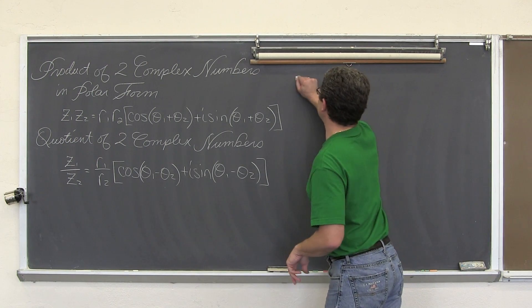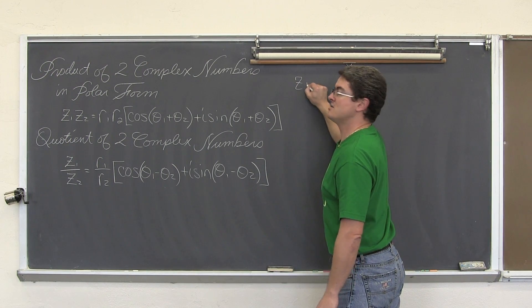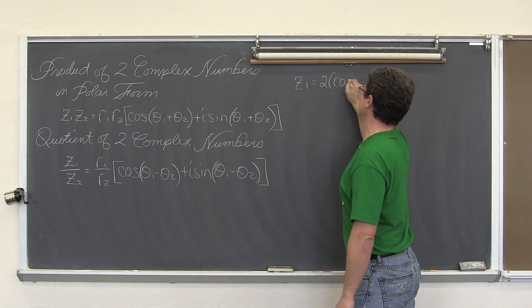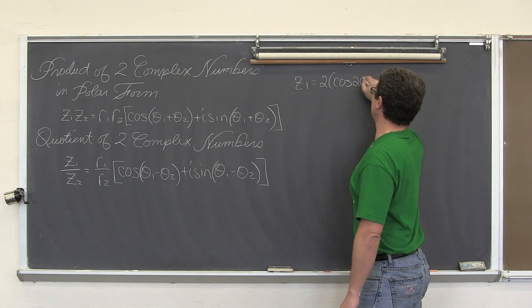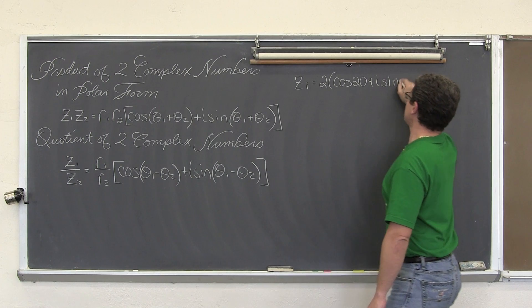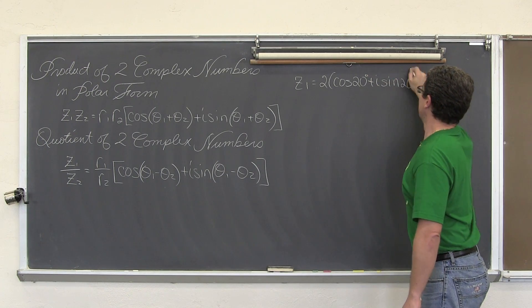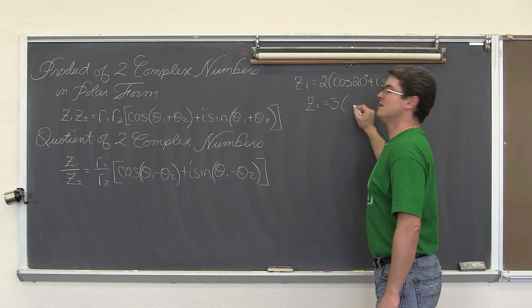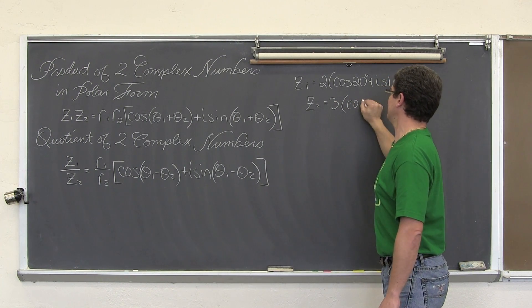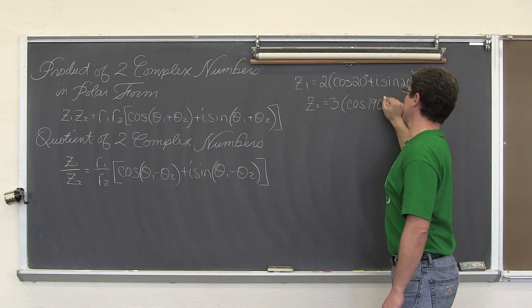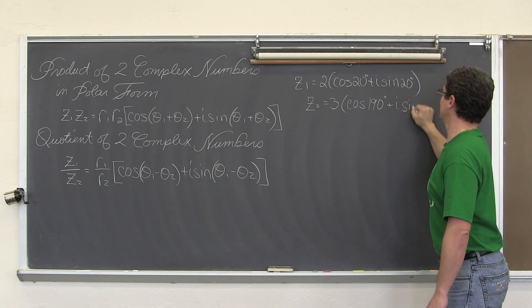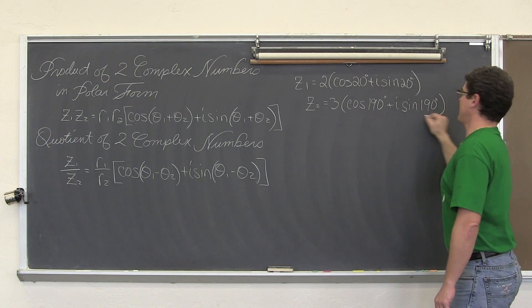We have z₁ equals 2 times the quantity cosine 20° plus i sine 20°. And z₂ equals 3 times the quantity cosine 190° plus i sine 190°.